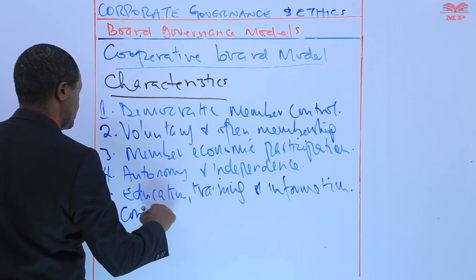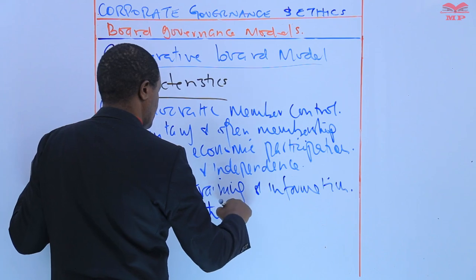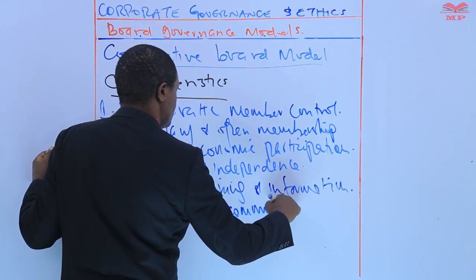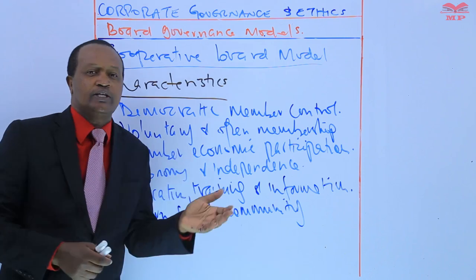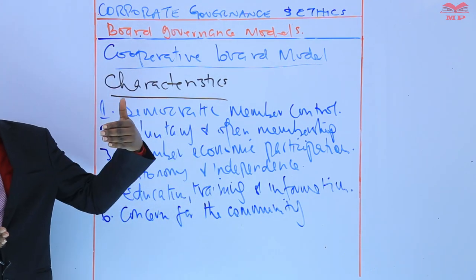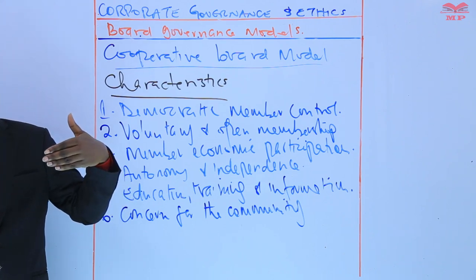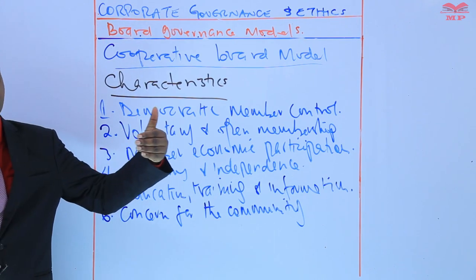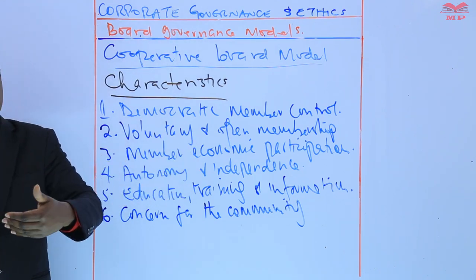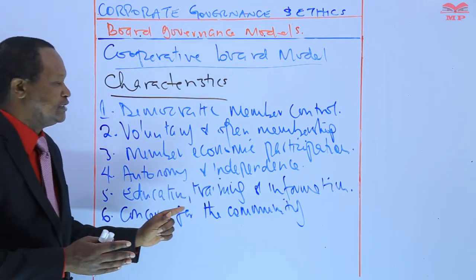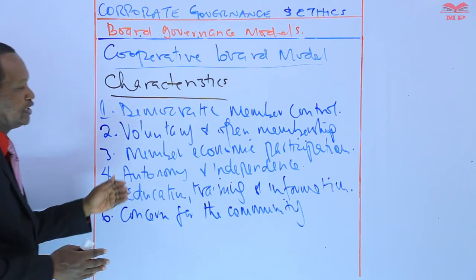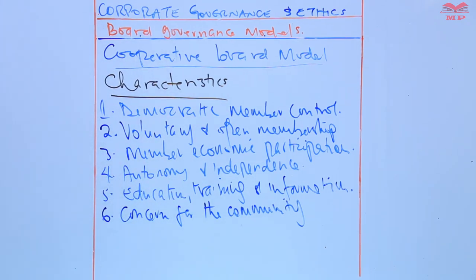The sixth characteristic is concern for the community. Cooperatives are deeply rooted in their communities and actively contribute to their social, economic, and environmental well-being through various initiatives and programs. The cooperative governance model presents a unique approach to organizational structure and decision making, with an emphasis on community building.